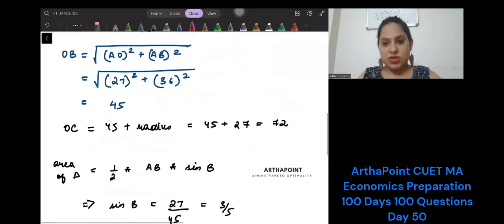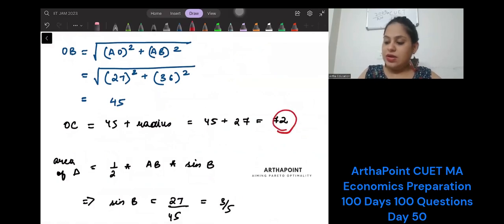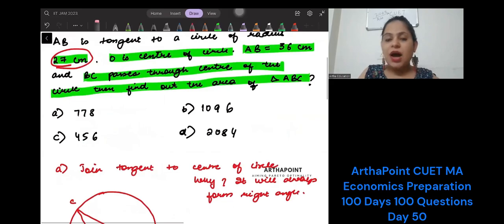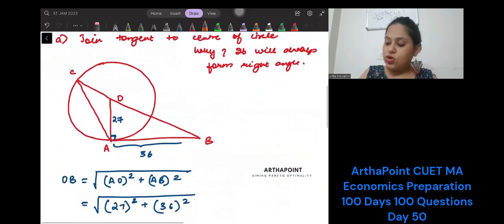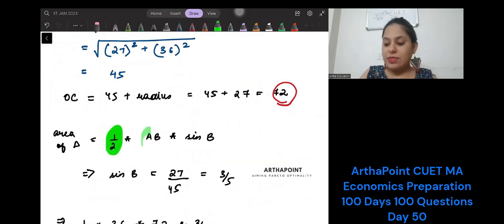So I have found out that CB is 72 and AB is 36. Now I just need the area of this triangle. If we don't know the third side of the triangle, what we do is for the two sides that I know, I will try to find the angle between them. And I will call this angle as theta. The area of this triangle is going to be half into AB into BC into sin B.